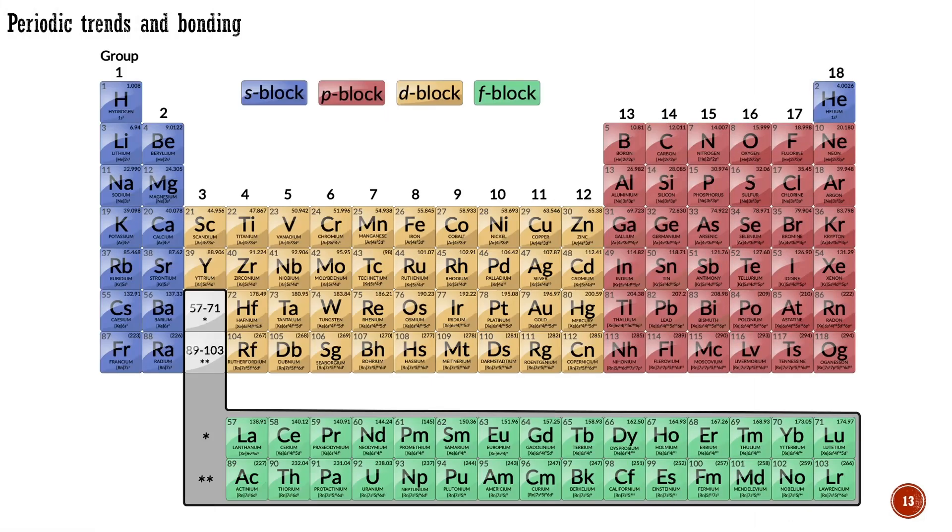Now we should briefly discuss the relation between periodic trends and bonding in transition metal complexes. The orbital energies fall as we go from left to right in the transition series. For each step to the right, a proton is added to the nucleus, thus providing an extra positive charge that stabilizes all the orbitals. The earlier metals are more electropositive because it is easier to remove electrons from their less-stable orbitals.